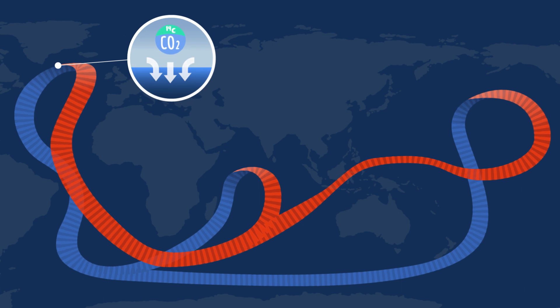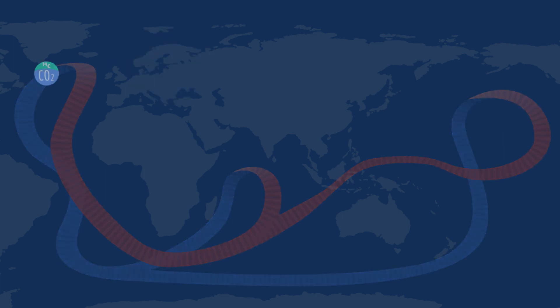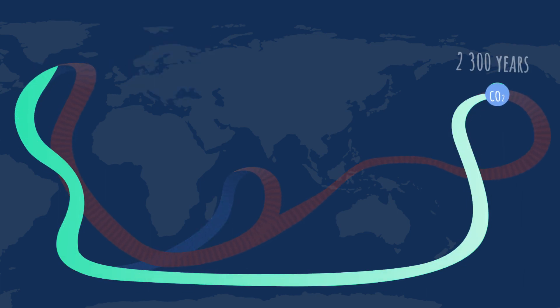Atmospheric CO2 is absorbed preferentially into the cold waters of the North Atlantic. These cold waters then sink and circulate through the deep sea, eventually reaching the Pacific Ocean after 2,300 years.